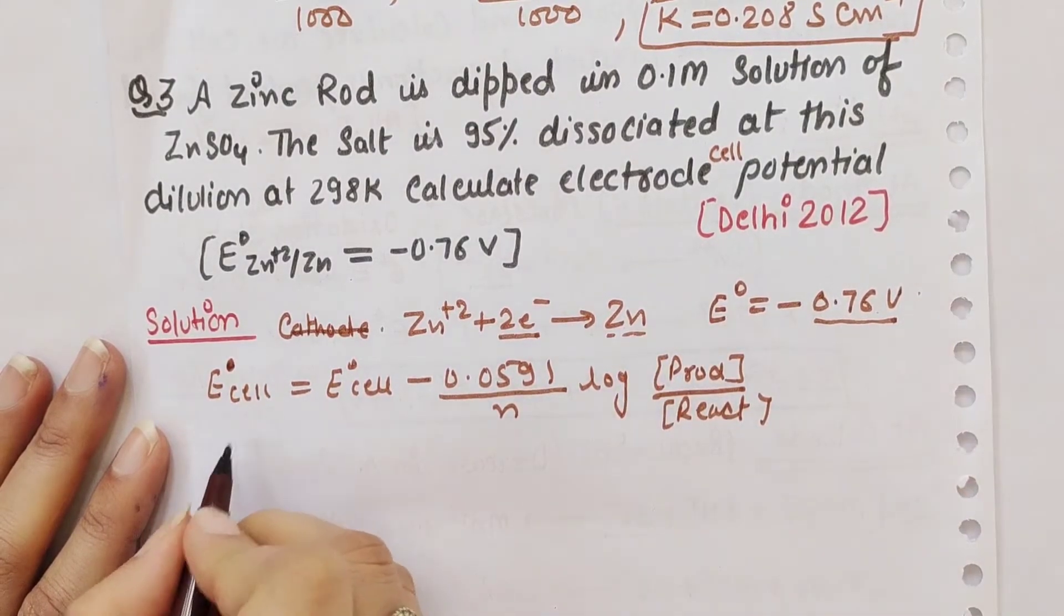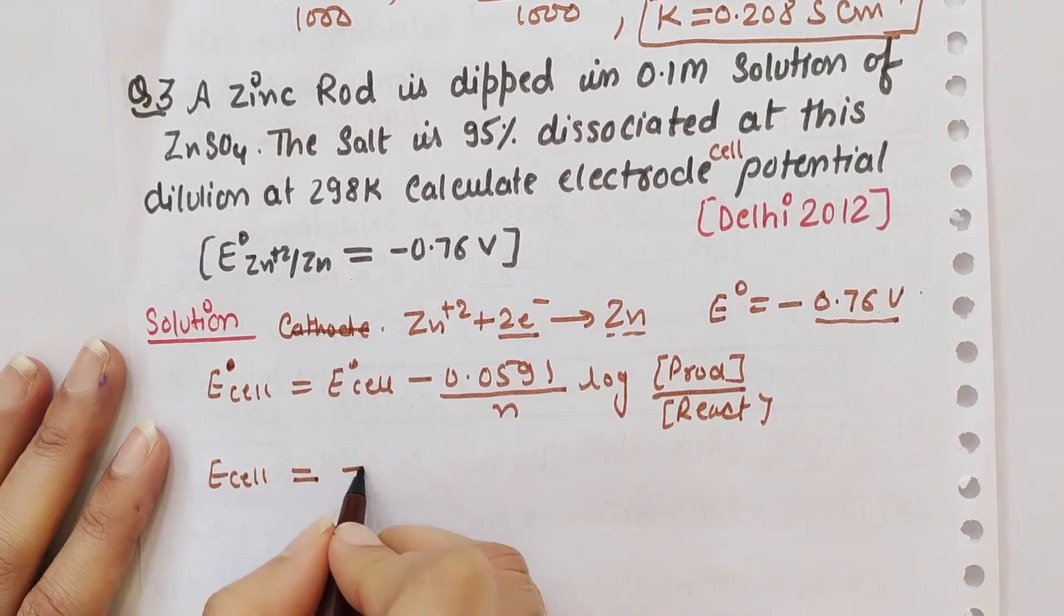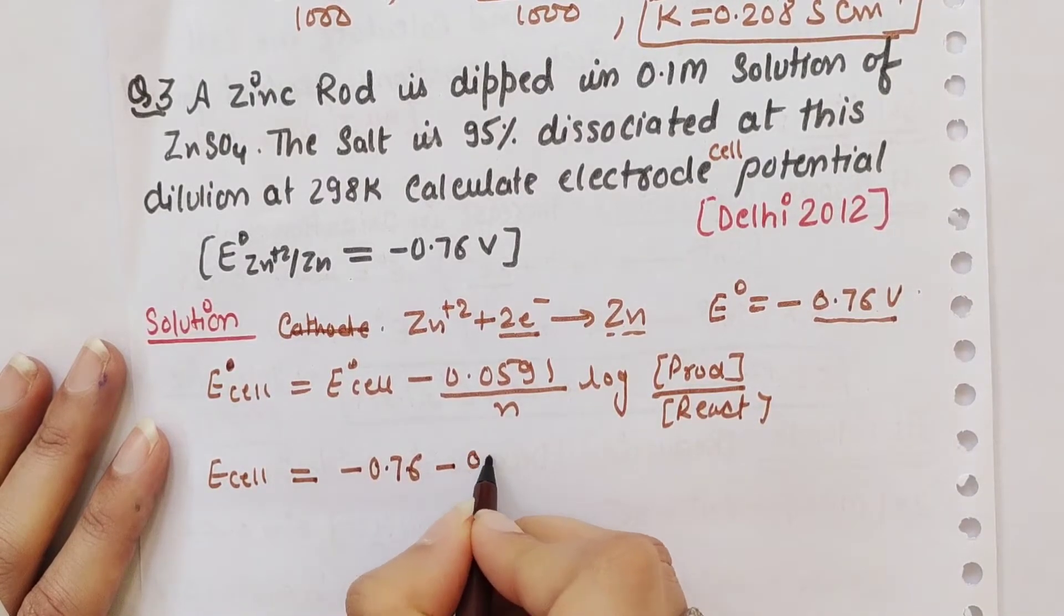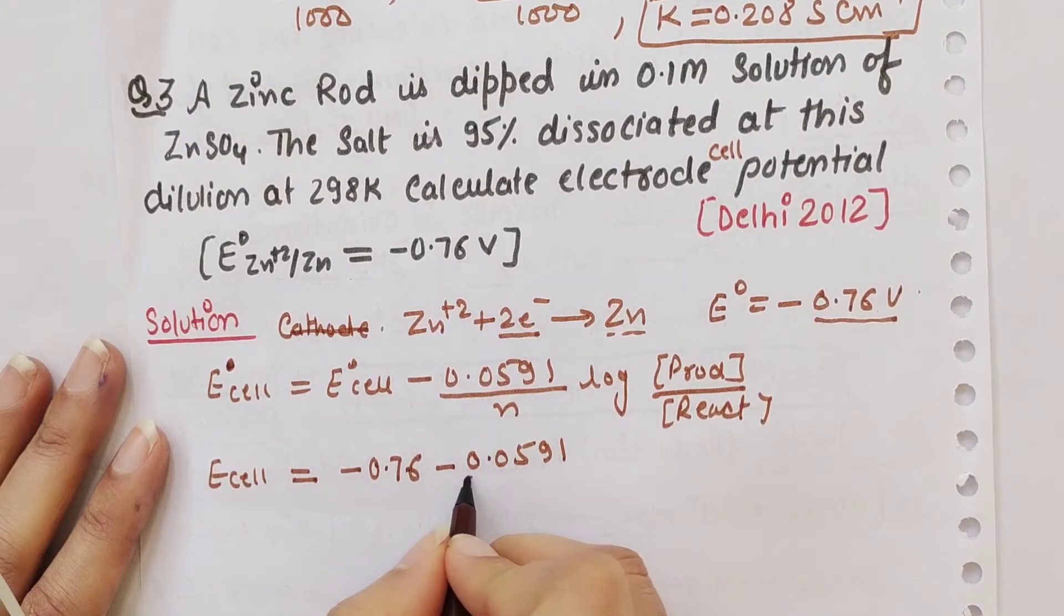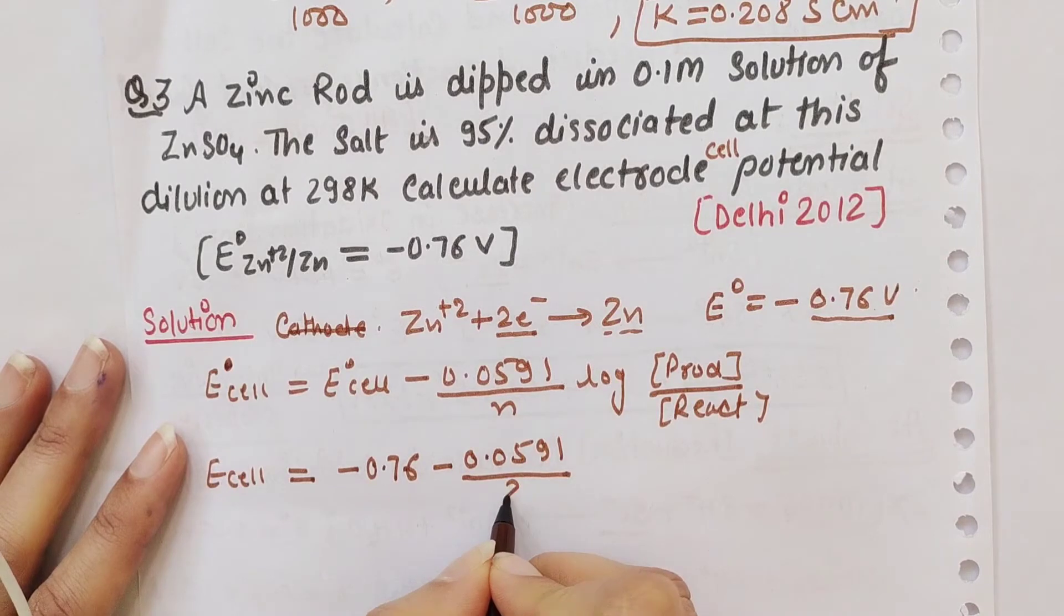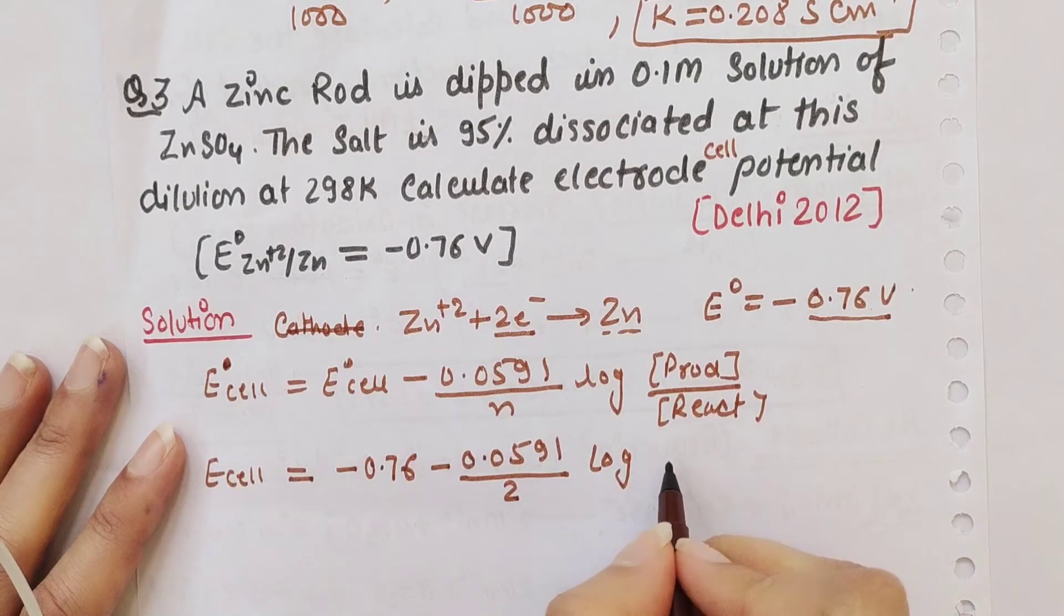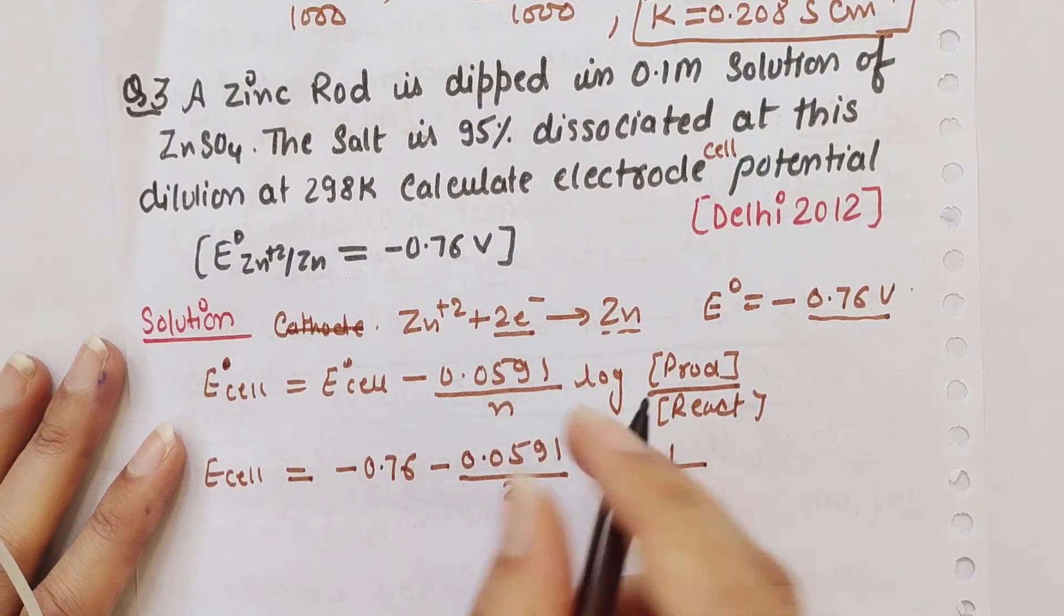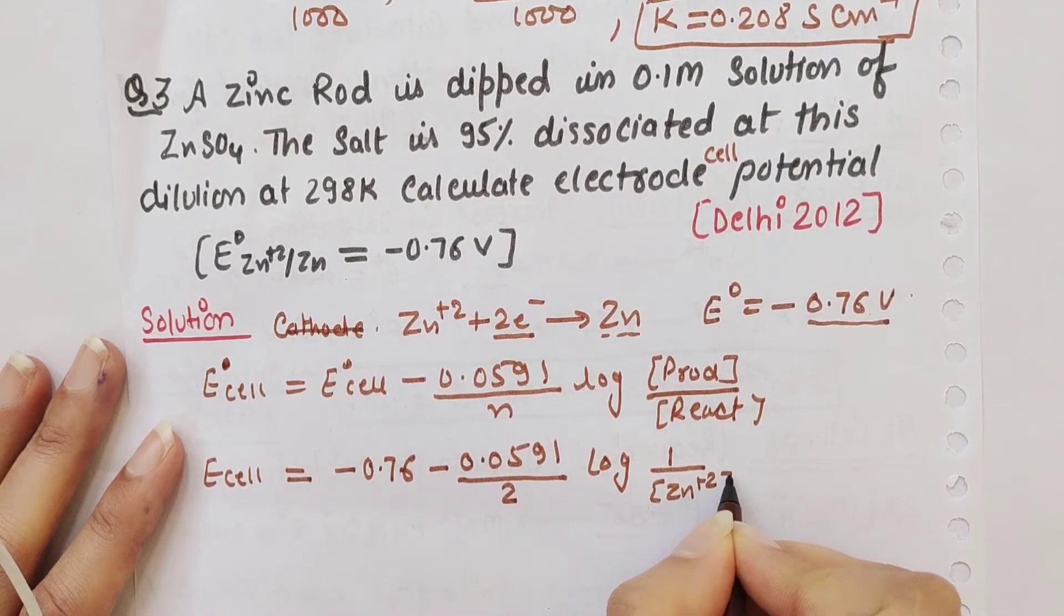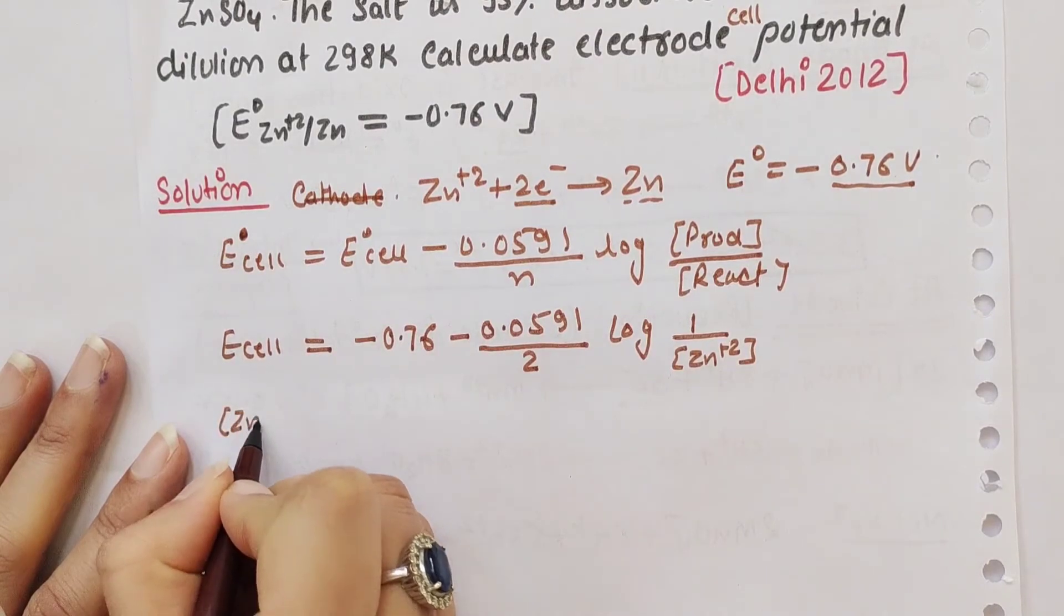E_cell equals -0.76 minus 0.0591 divided by 2, times log of product over reactant. The product is 1, and the reactant is the Zn²⁺ ion concentration.